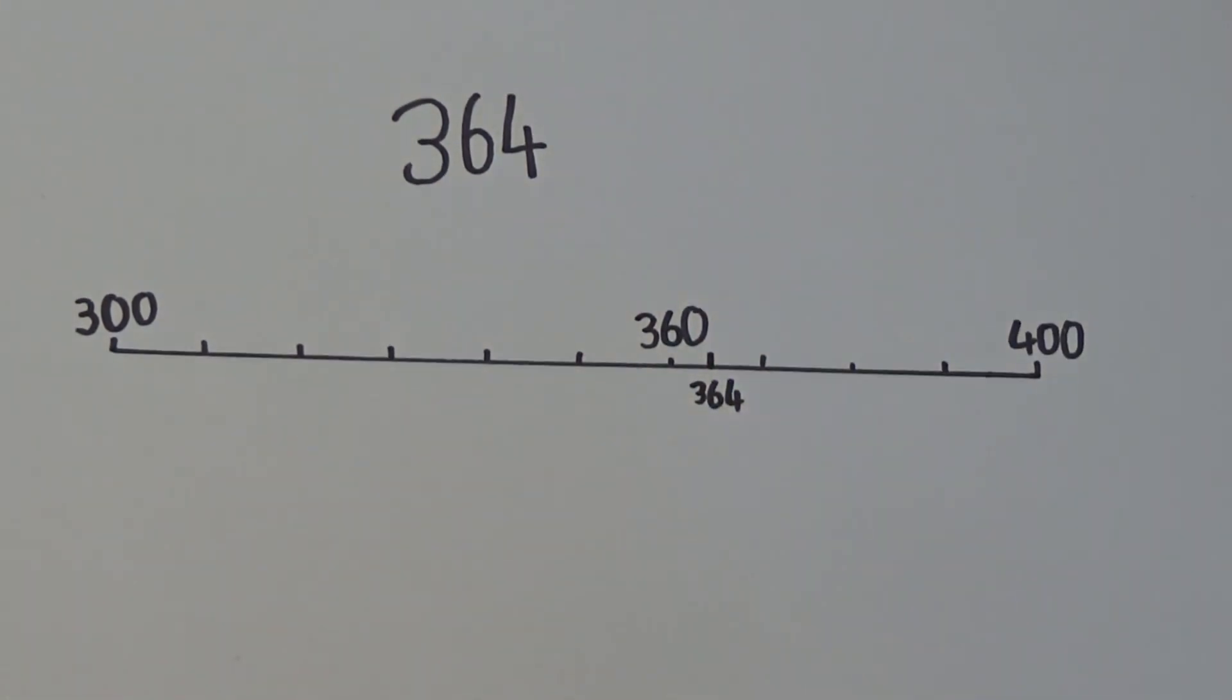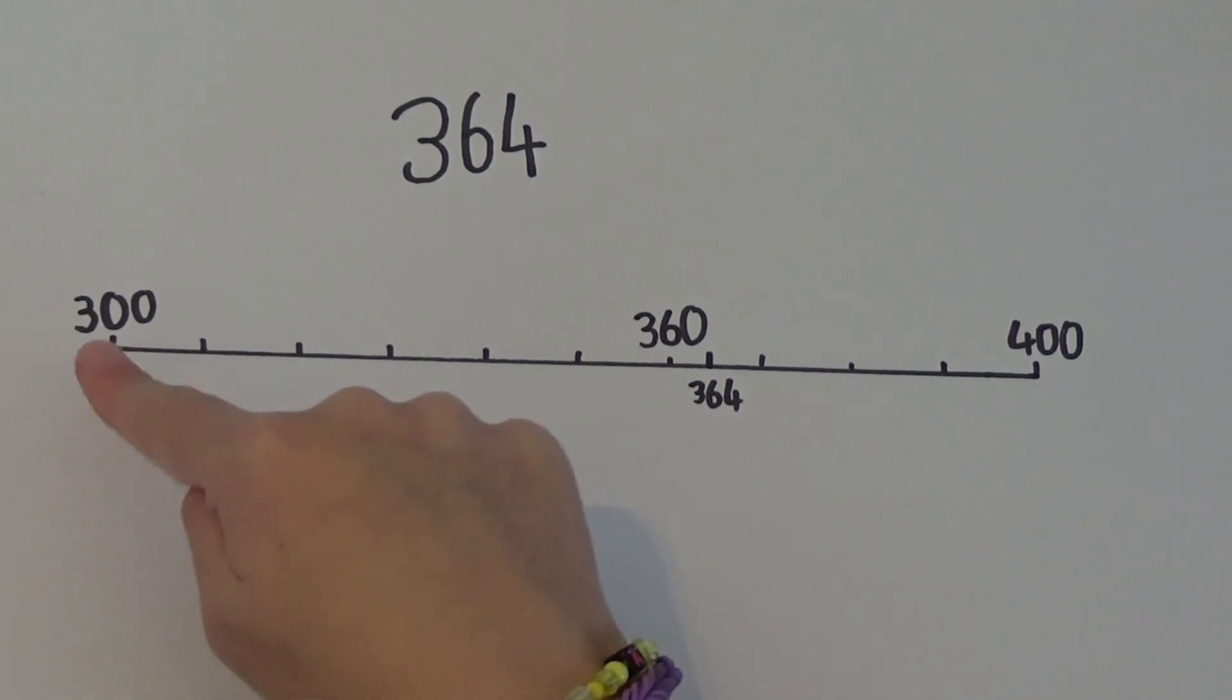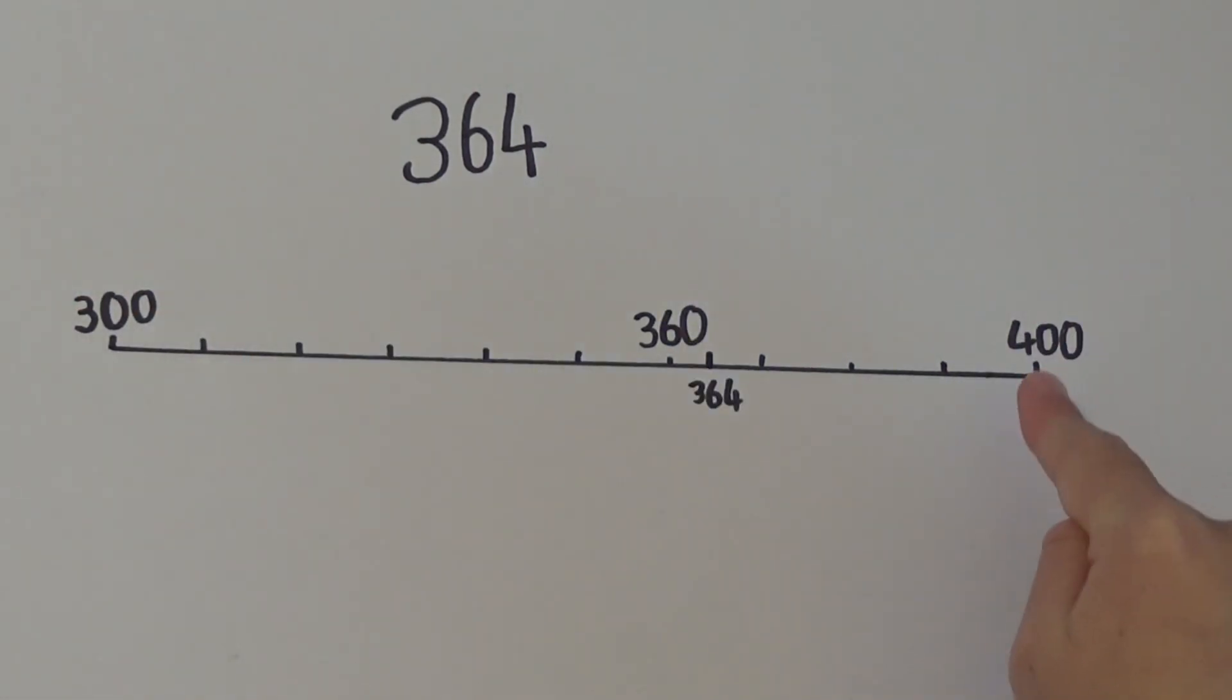I can see straight away that 364 is closer to 400, so I know it must round up to 400. I can also check this by counting how far away it is from 300 and how far away it is from 400. I need to count on 64 to get from 300 to 364, but only 36 to get from 364 to 400.